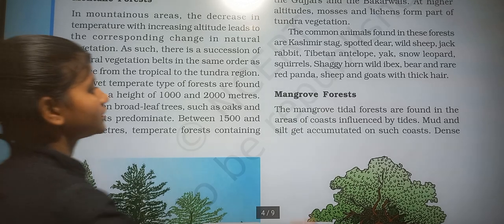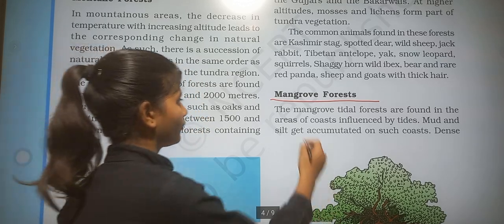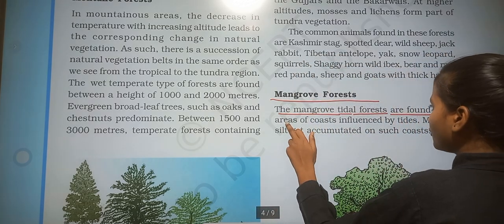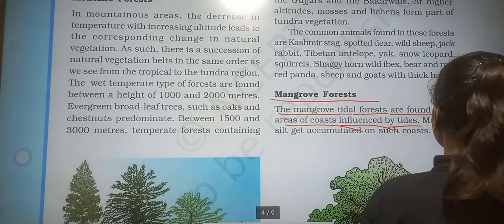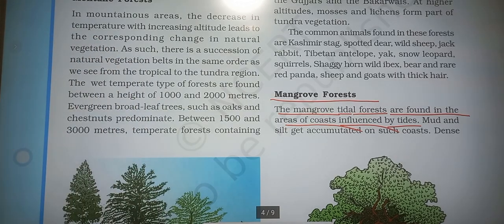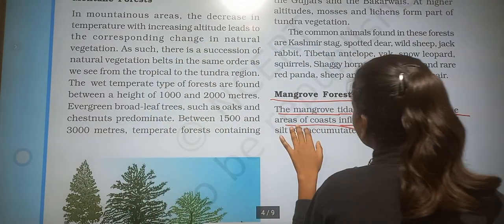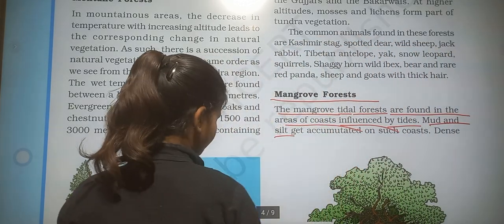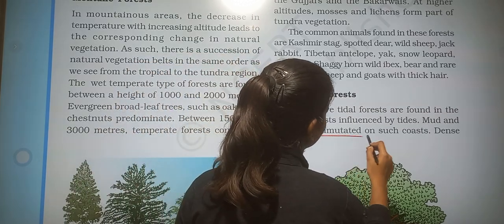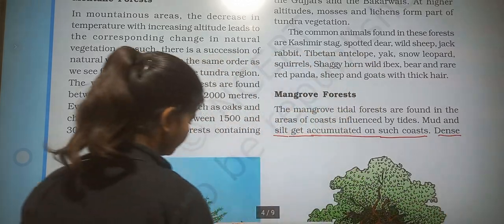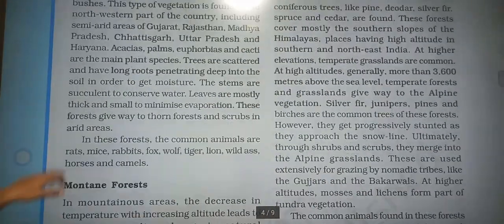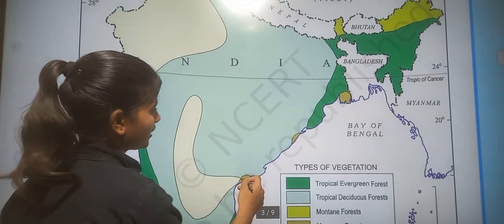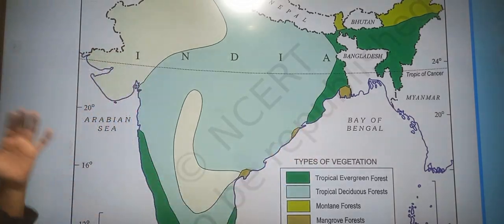The last forest is mangrove forest. Mangrove tidal forests are found in areas of coastal influence by tides. Mud and silt get accumulated on such coasts, and these forests are mostly present in muddy areas.